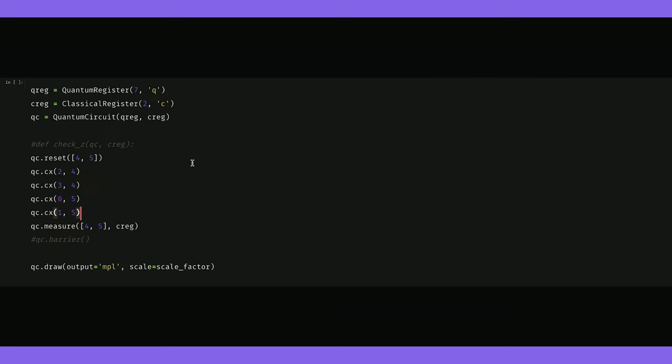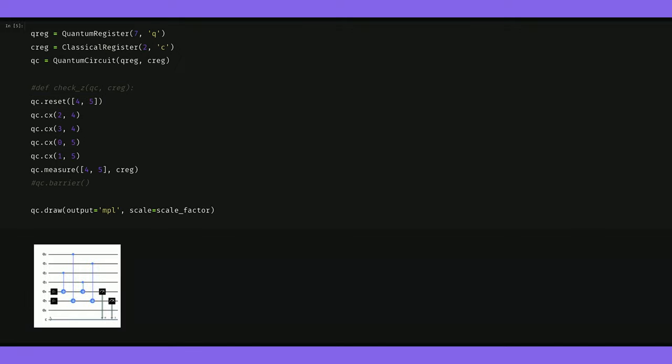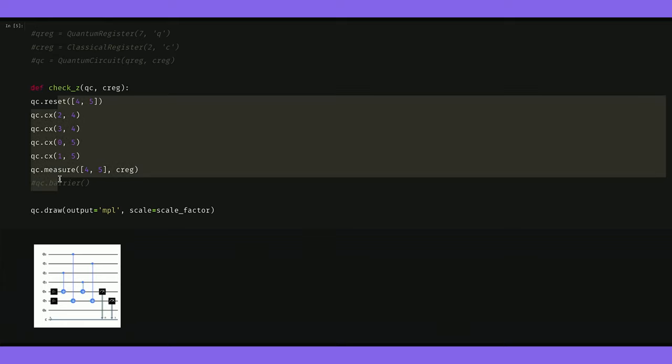So now we'll create a quantum circuit that has a quantum register of seven qubits and now a classical register of two qubits for measuring our ancillas. We'll reset those ancillas, do a series of CNOTs, and measure in the z basis. And this is the circuit we get. Now we'll comment out the things we don't need and make a method for the check_z's.